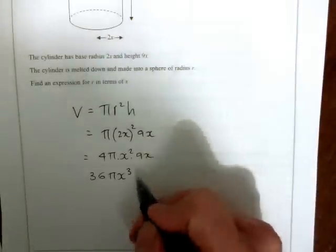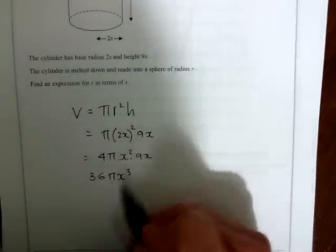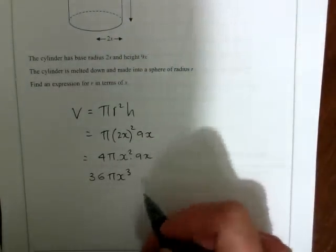x squared times x gives x cubed, and 4 times 9 is 36, with π. So this is the volume.